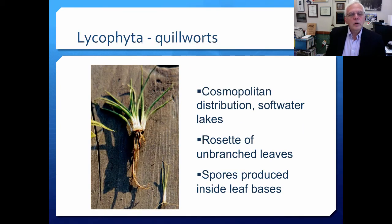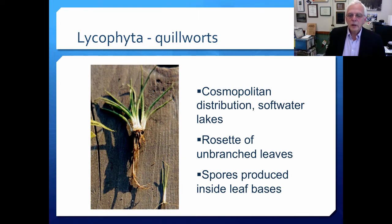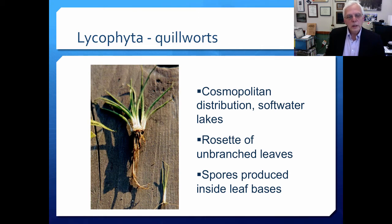The next group I'd like to talk about is the Lycophyta — the quillworts. They look pretty much like normal plants, but the leaves have a sort of unbranched leaf structure, and they are kind of quill-shaped, sort of pointed, as you can see. They have a very cosmopolitan distribution and exist within the shallow waters of soft water lakes — those without really a lot of dissolved salts in them. They produce spores inside the leaf bases. This is what the Lycophyta or quillworts look like.